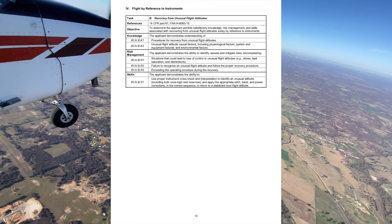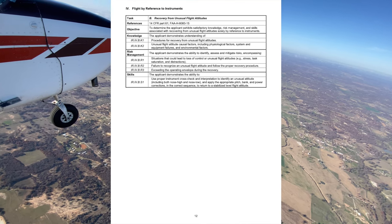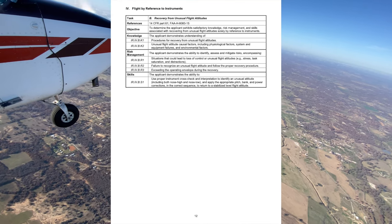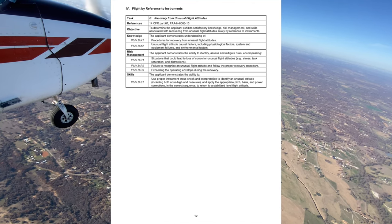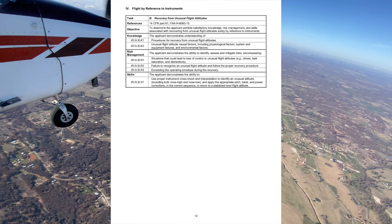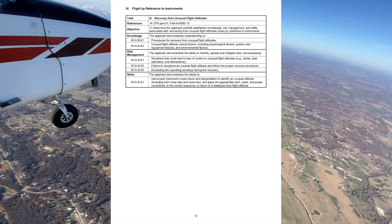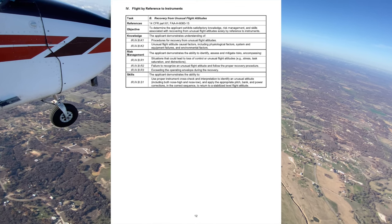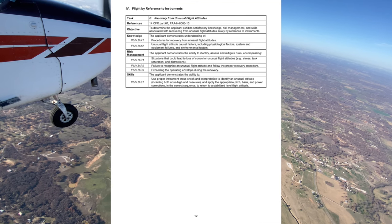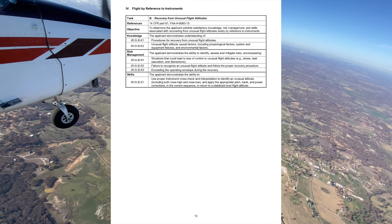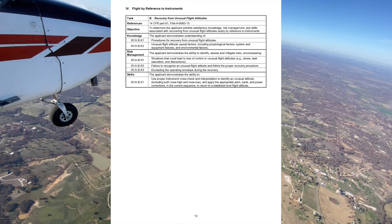Your radio call would sound like: 'Fort Worth Approach, Cessna 738 Uniform Yankee, 10 miles north of the field, looking to pick up IFR to Wichita Mountain.' You could also do a pop-up IFR, obtained directly from Approach: 'Approach, Cessna 738 Uniform Yankee, 15 miles north of Denton, at 4,000, request pop-up IFR clearance to Wichita Mountain.'